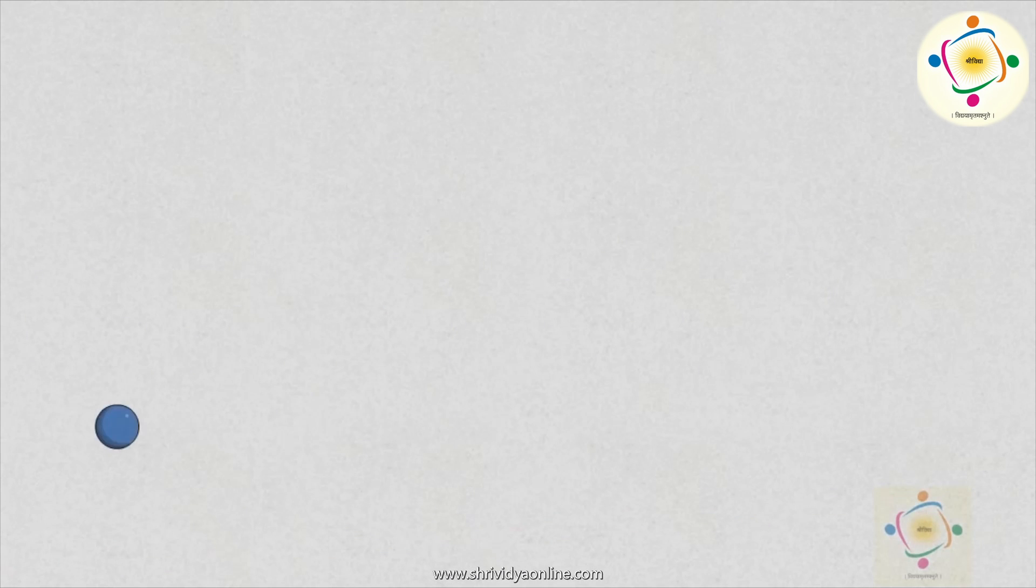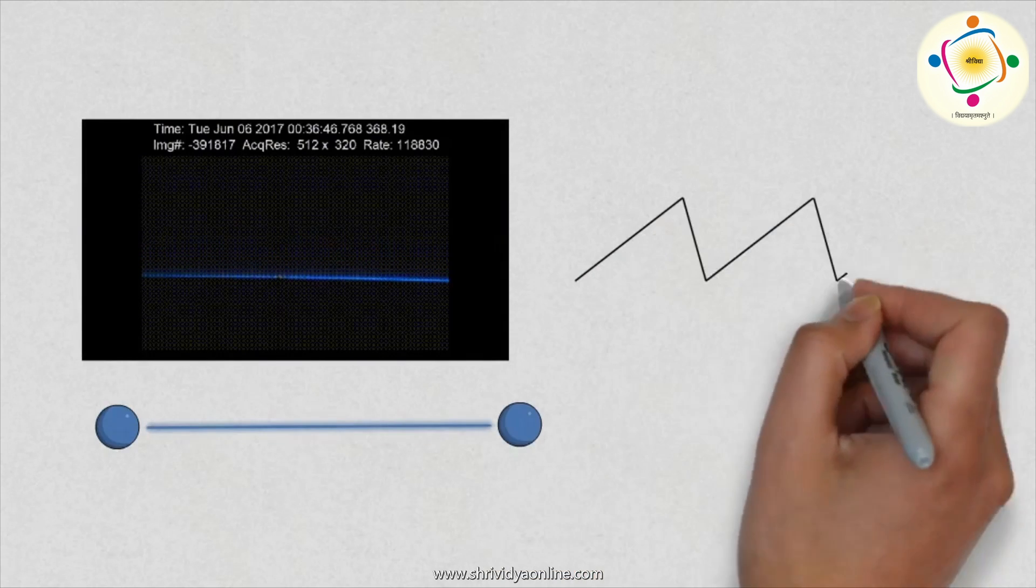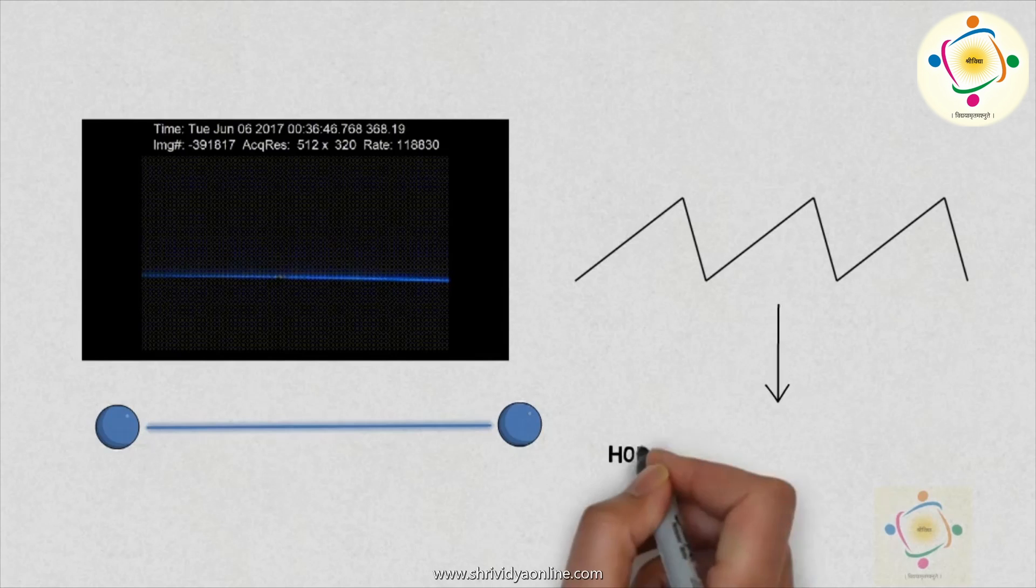When the electron beam moves very fast with particular frequency on the screen, we feel there is a line. For this, we need to give a sawtooth wave to the horizontal deflection plate.